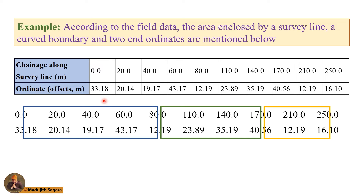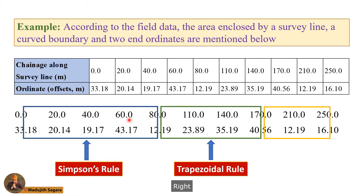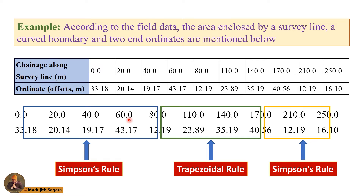We need to identify the best method to use for each region. We can use both the trapezoidal rule and Simpson's rule. For Simpson's rule, an even number of intervals must be available. For the first set, which has four intervals (an even number), we use Simpson's rule. For the second set, we use the trapezoidal rule. For the third set, we can use Simpson's rule again.